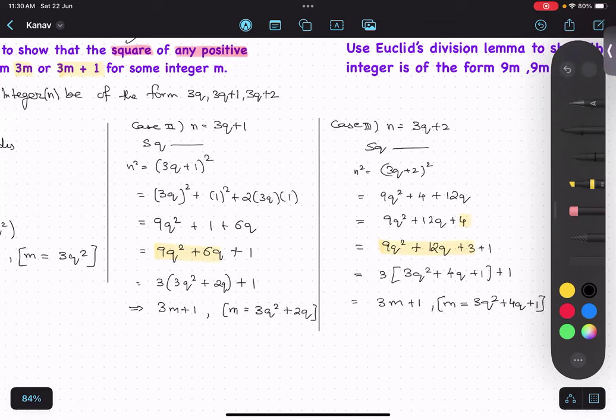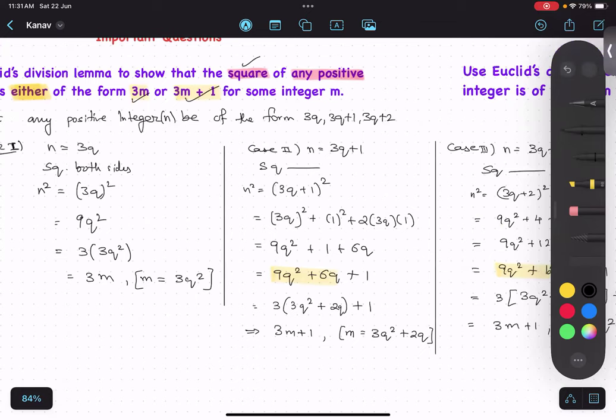Did you understand? Sir, it should be 3M plus 2, right? Why 3M plus 2? No. Because N also we took 3Q plus 2. The question is saying we have to convert this into 3M or 3M plus 1. Only both of them. Yes.